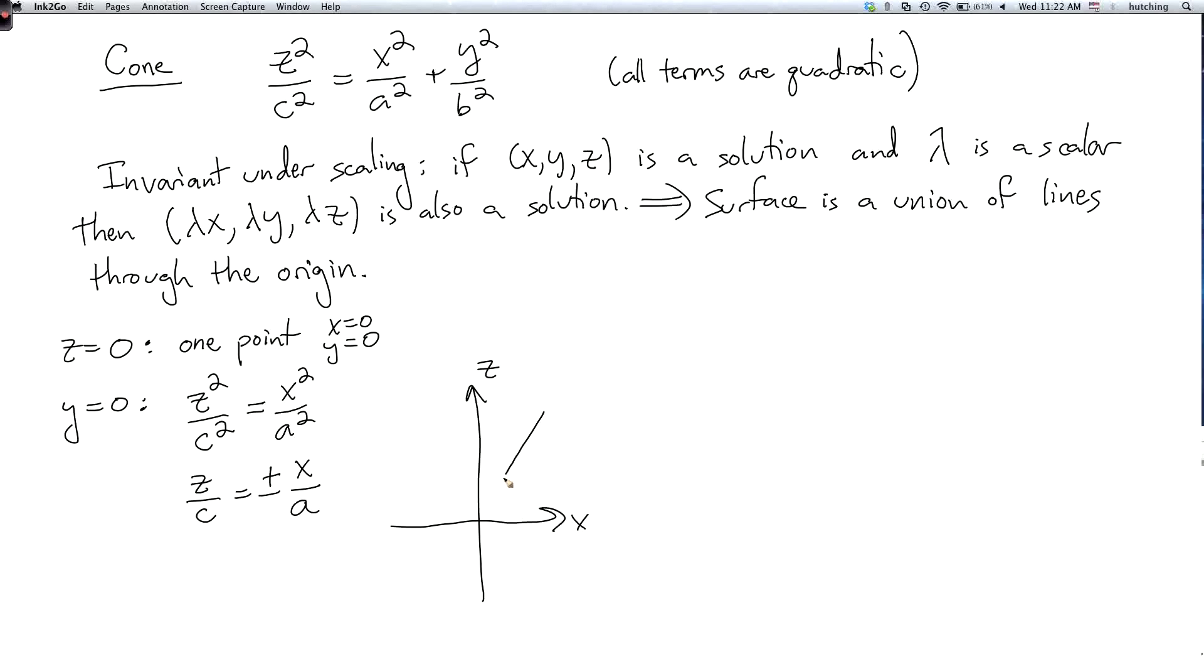So they look like this. So this line has slope c over a. As usual I'm assuming that a, b, and c are positive. And this line has slope minus c over a. So this is two lines.